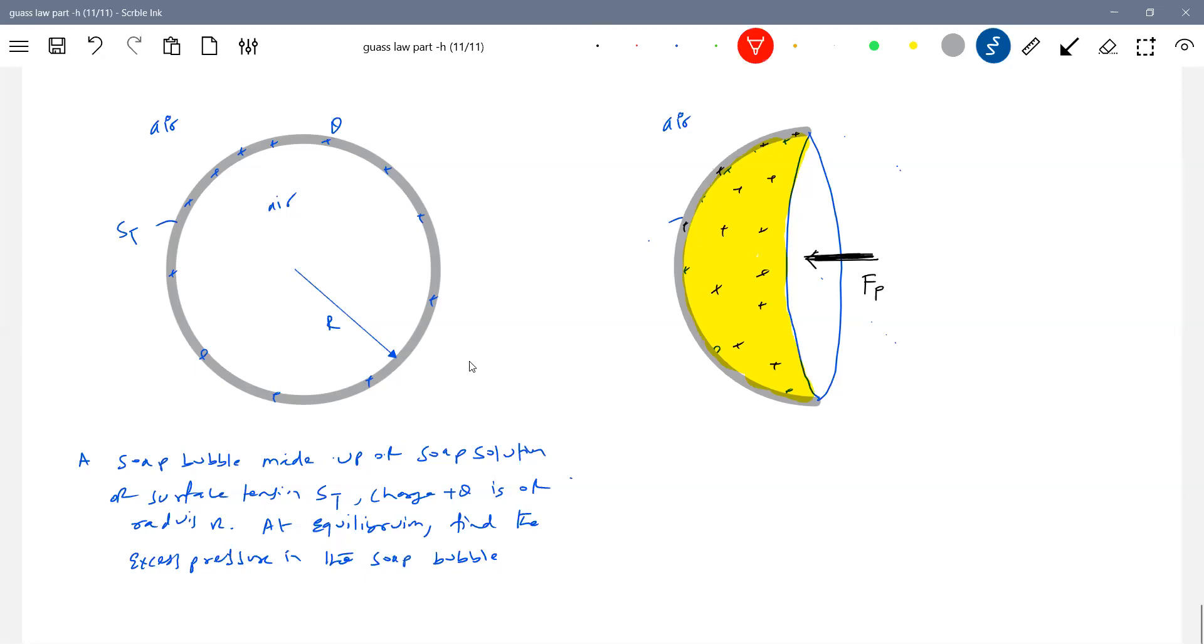Then force due to surface tension. Can you remember? We used to show arrows here like this. Both inner as well as outer surface, we have to show it. Look at the arrow. It is starting from inner as well as outer surface.